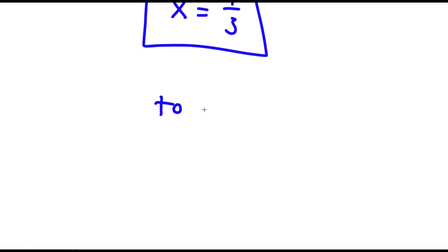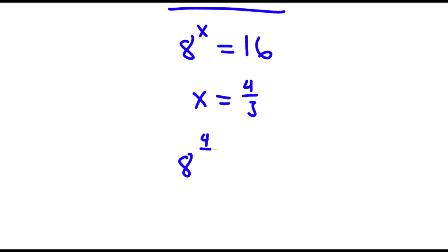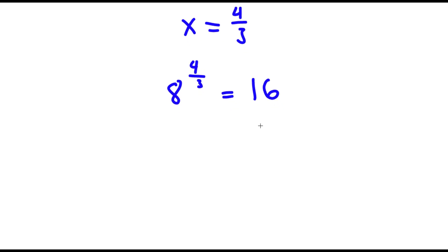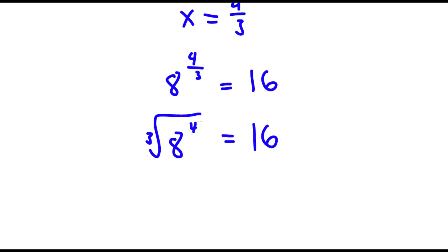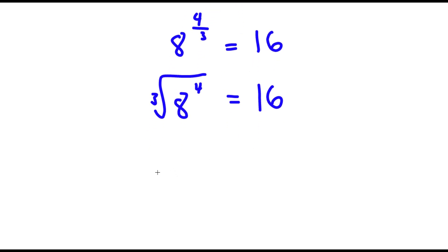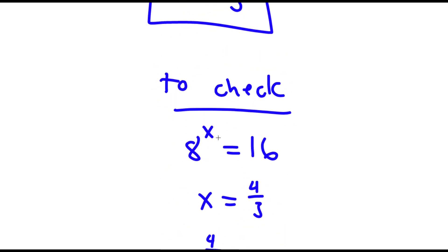Now to check: my original equation was 8 to the power of x is equal to 16. Now that I know x is equal to 4 over 3, I have 8 to the power of 4 over 3 is equal to 16. That's the same thing as the cube root of 8 to the power of 4. 8 to the power of 4 equals 4,096, so I have the cube root of 4,096 is equal to 16. The cube root of 4,096 is asking what to the power of 3 equals 4,096, and the answer is 16. So 16 is equal to 16, and our answer is correct.